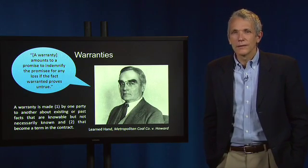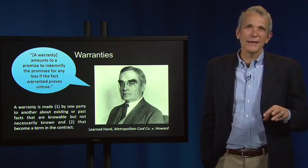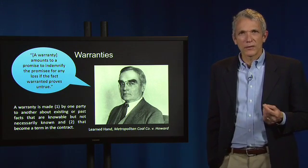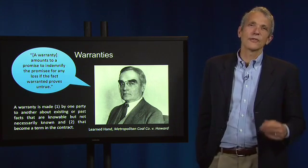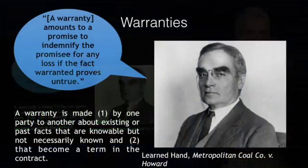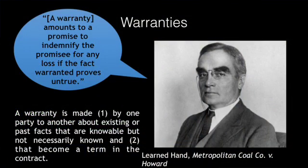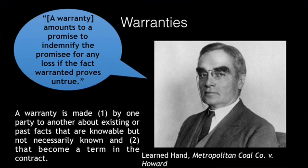We can think of warranties, on the other hand, as a special kind of promise. A warranty promises that a person's representations are true. Judge Learned Hand explained in a Second Circuit case from 1946, Metropolitan Cole v. Howard, that a warranty amounts to "a promise to indemnify the promisee for any loss if the fact warranted proves untrue, for obviously the promisor cannot control what is already in the past." In other words, if a representation proves false, the party who made it has breached his or her warranty that all representations of fact are true.